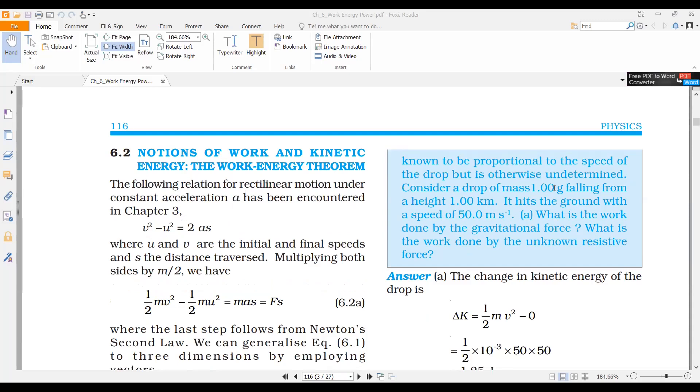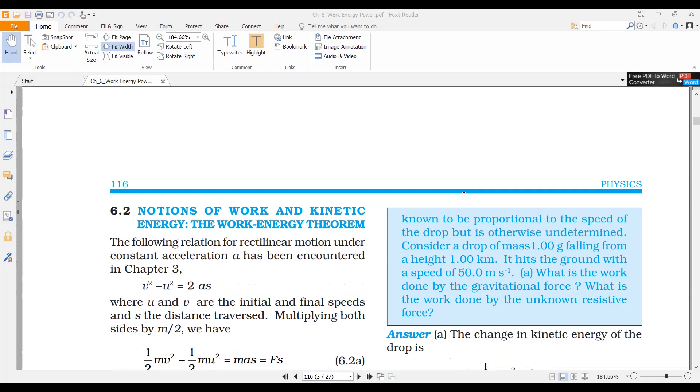Consider a drop of mass 1 gram falling from a height of 1 kilometer. It hits the ground with the speed of 50 meters per second. What is the work done by the gravitational force during this displacement and what is the work done by the unknown resistive force? So these two things we have to find out.